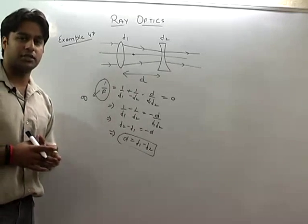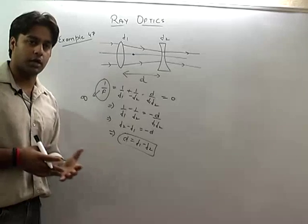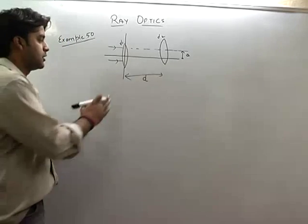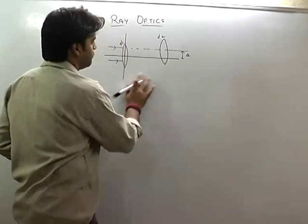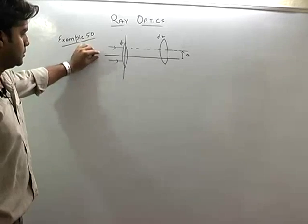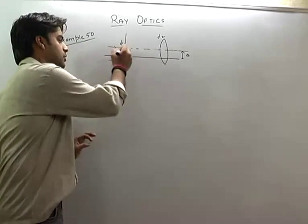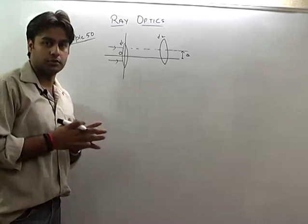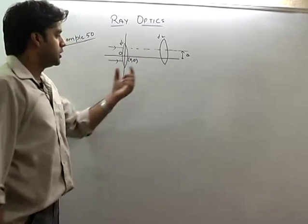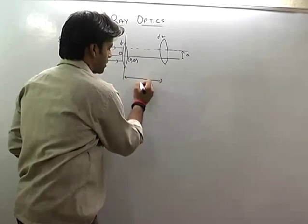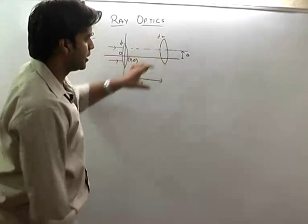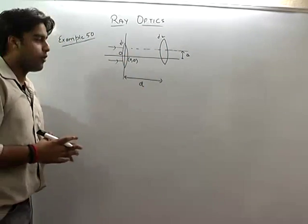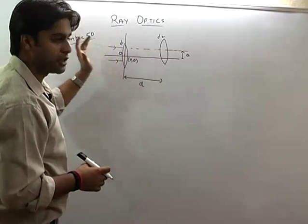Now let us see example number 50 from the booklet. There are two convergent lenses whose focal lengths are f1 and f2. This is the first lens on the principal axis, and its center is taken as the coordinate origin (0, 0). The second lens is placed at distance d from the first lens, and it is shifted by delta distance along the x-axis perpendicularly.